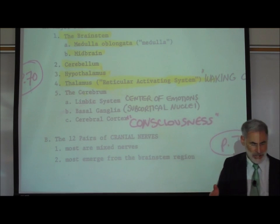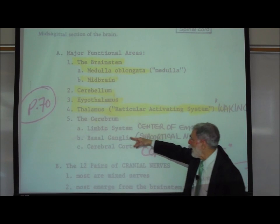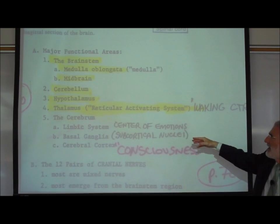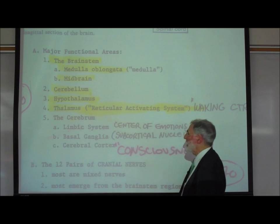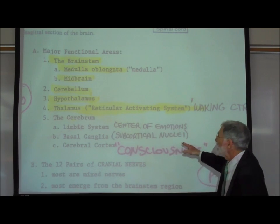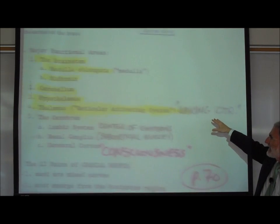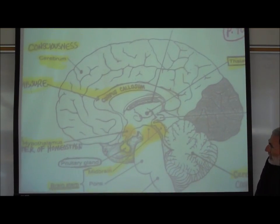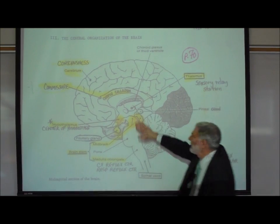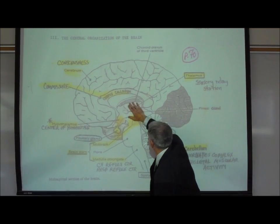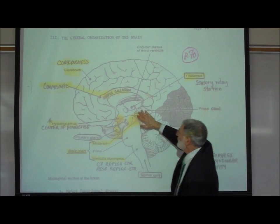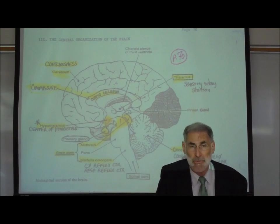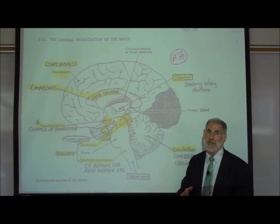Right here it says the thalamus. The thalamus forms the upper part, the upper portion, of what is sometimes known as the reticular activating system or RAS. It is associated in part with the waking center, so the thalamus comprises the waking center. In our picture, the thalamus is right here in the center of the brain, right in the middle of the brain is where the thalamic nucleus or thalamus is located.